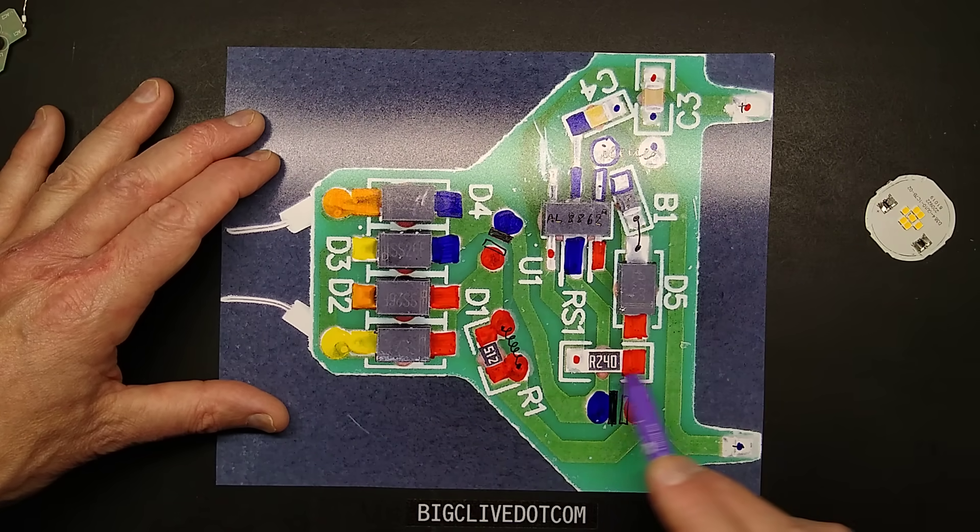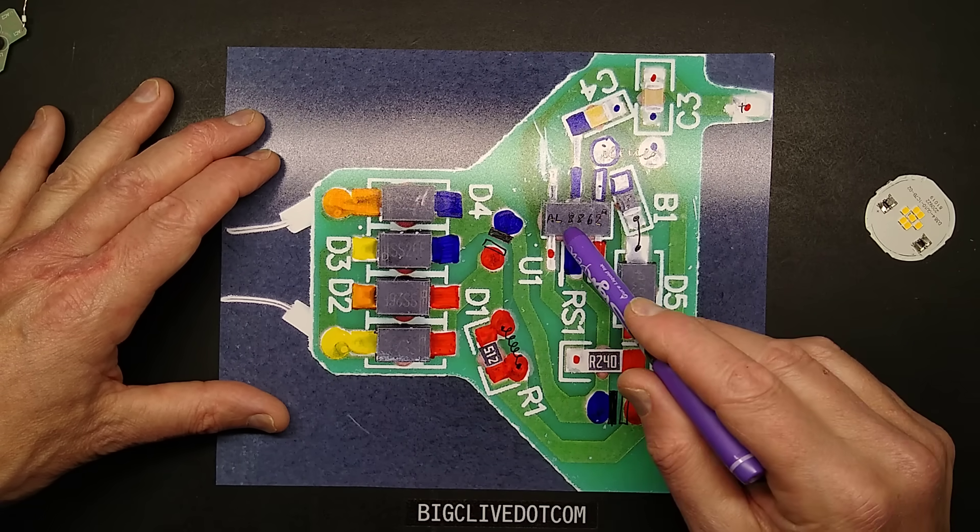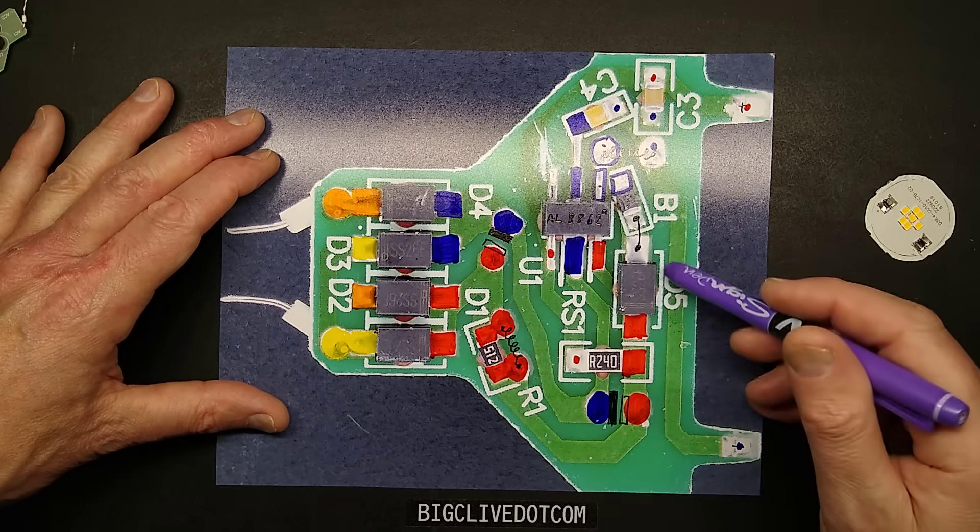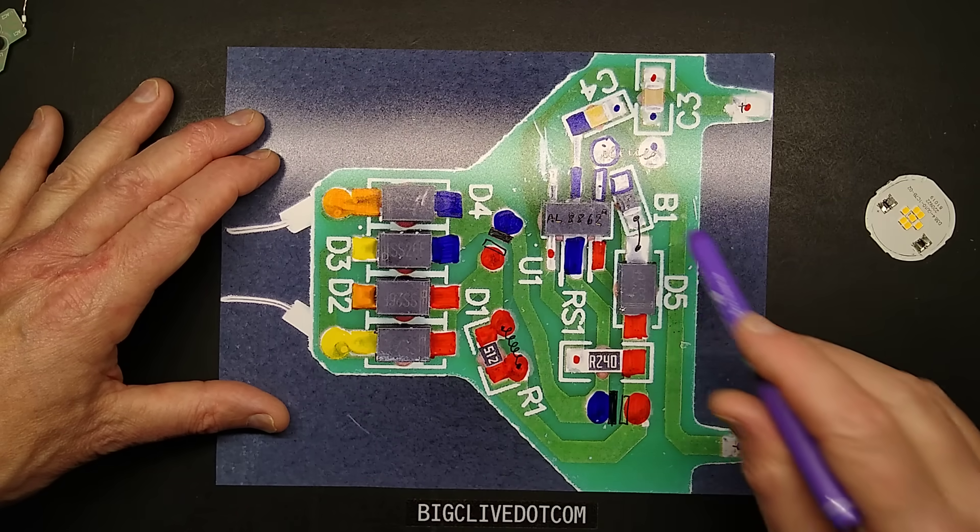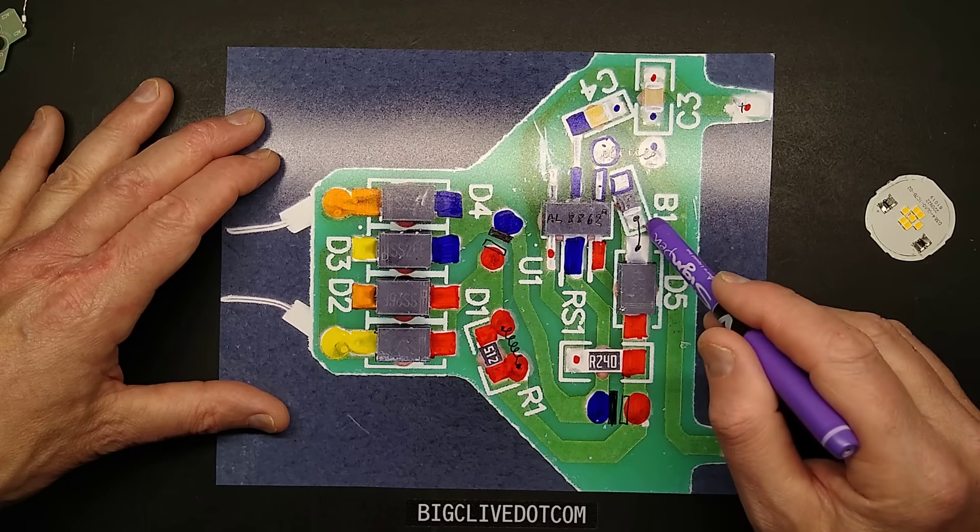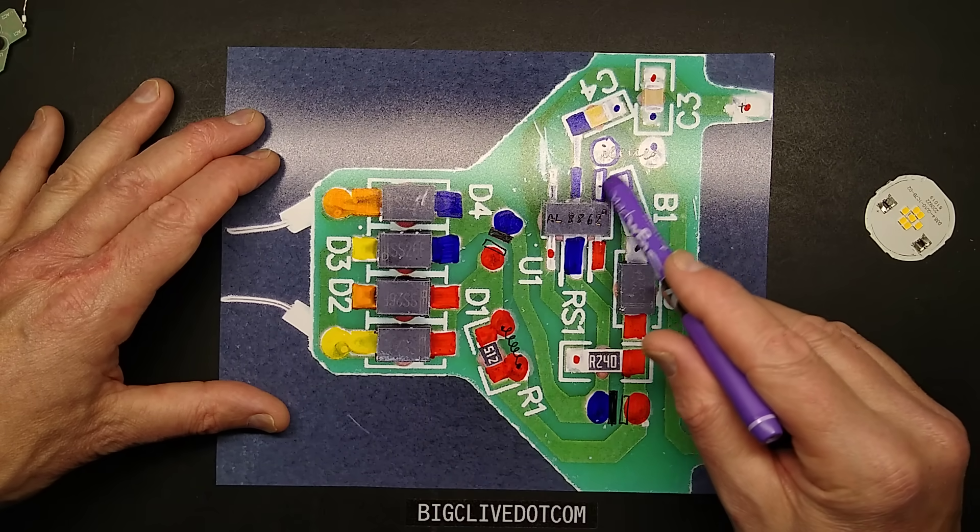So what we have here, we have a current sensor resistor for regulating the current through the LEDs. We have the chip itself. We have the inductor to actually drop the current and then we have this sort of flyback diode, but there is a mystery component here. It's marked B1 and it measures a dead short, almost like they've put a link in place of something. I do not know what this is.